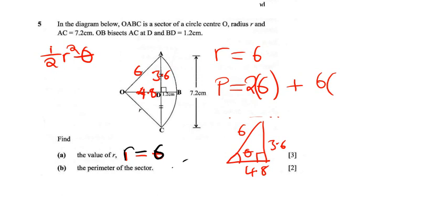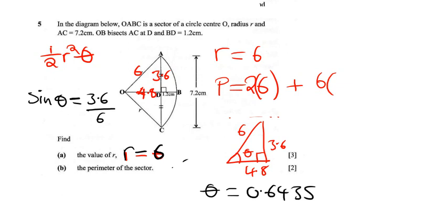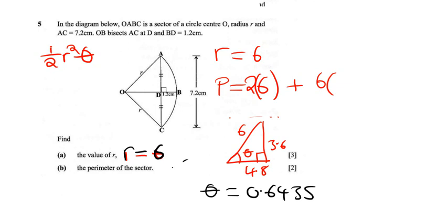Let's use sine. We can say sine θ — the opposite side to that angle is 3.6, and the hypotenuse is 6. So 3.6 divided by 6 — now sine inverse of that gives approximately 0.6435 radians for the angle theta. But if you are careful, the angle theta I was using is only half of the full angle, so we need to multiply by 2. The angle times 2 gives us the full angle to use for the arc length, giving approximately 1.287 radians.